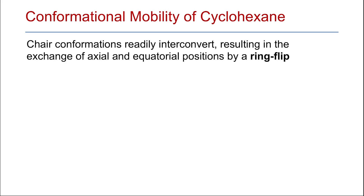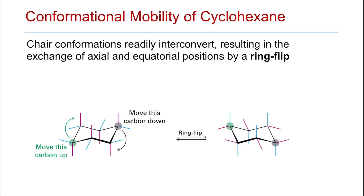Conformational mobility of cyclohexane: the chair conformations of cyclohexane readily interconvert, resulting in an exchange of the axial and equatorial positions by a ring flip. In the ring flip, carbon number one moves downward and carbon number six moves upward, so all carbon atoms change their position. As the ring flips, all substituents change their position as well — all axial substituents become equatorial, and all equatorial substituents become axial.